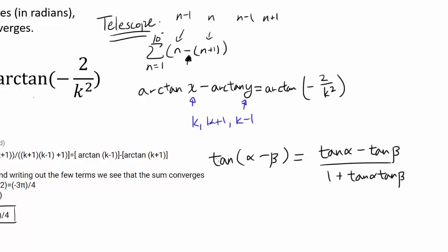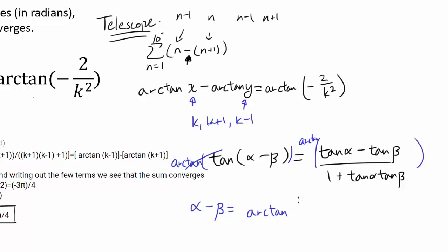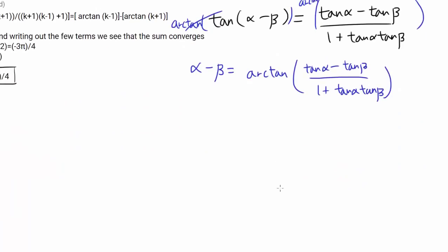From this, we can simply take the arctangent of both sides, and arctangent and tangent cancel out. You have to be careful because arctangent of tangent is not necessarily the same value — you may need to add plus or minus pi times k. Arctangent is only defined to output values between negative pi over 2 and pi over 2 exclusive.